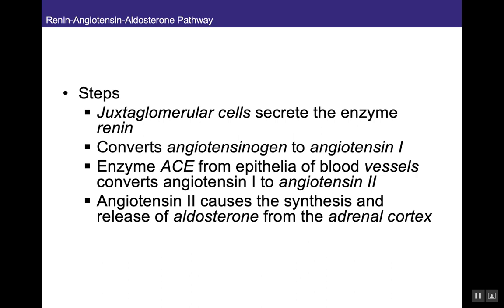Here are the steps of the renin-angiotensin-aldosterone pathway: juxtaglomerular cells secrete the enzyme renin, which converts angiotensinogen to angiotensin I. Within blood vessels, the enzyme ACE — angiotensin-converting enzyme — found in the epithelium of blood vessels converts angiotensin I to angiotensin II. Angiotensin II causes synthesis and release of aldosterone from the adrenal cortex, and it is also a powerful vasoconstrictor, increasing total peripheral resistance and mean arterial pressure — a mechanism to bring blood pressure back to normal.